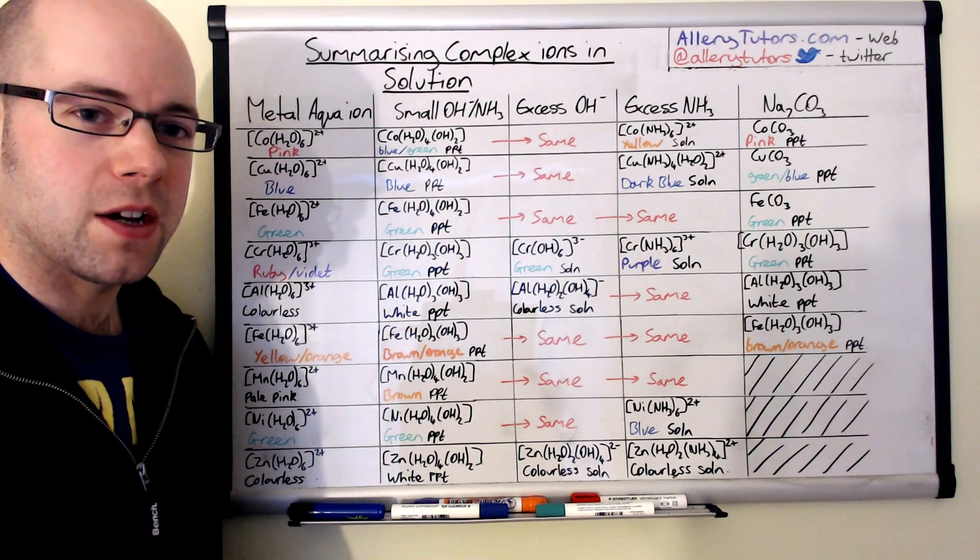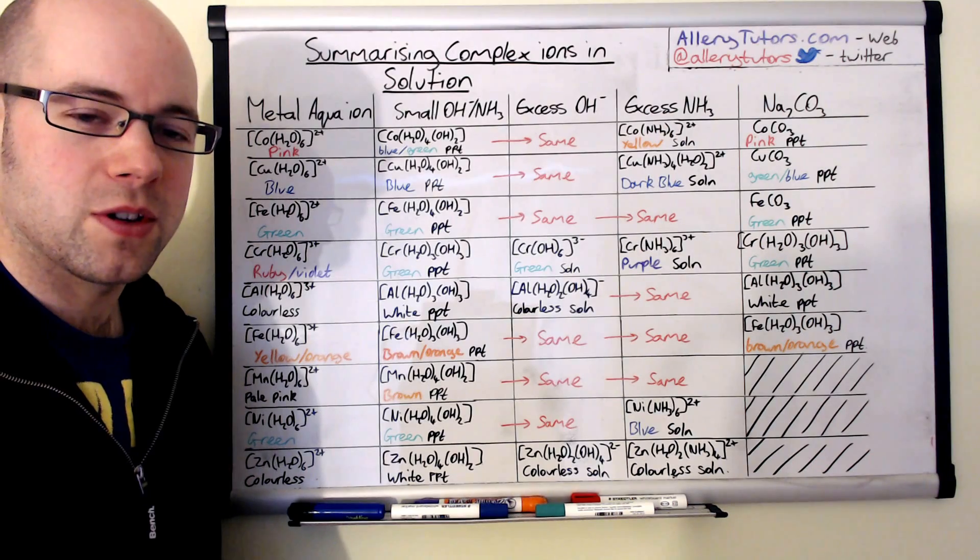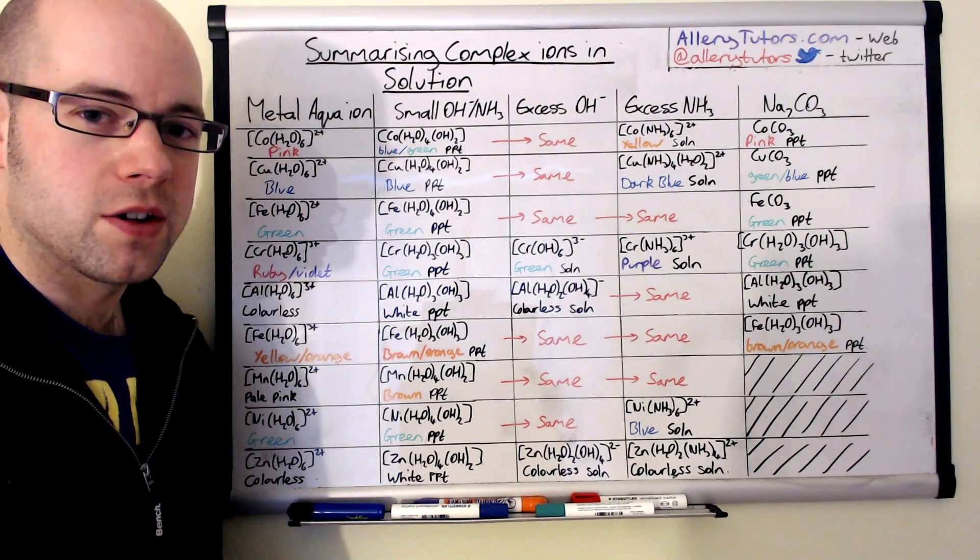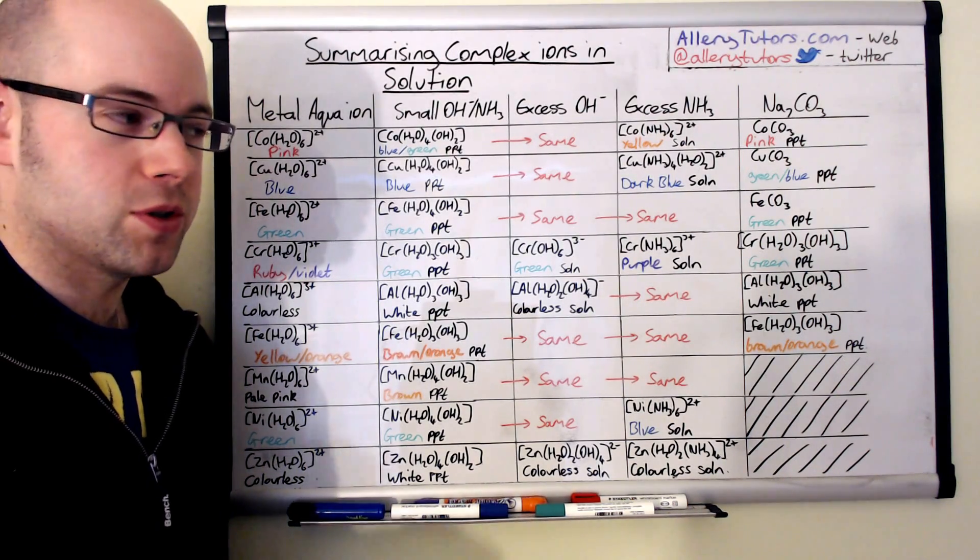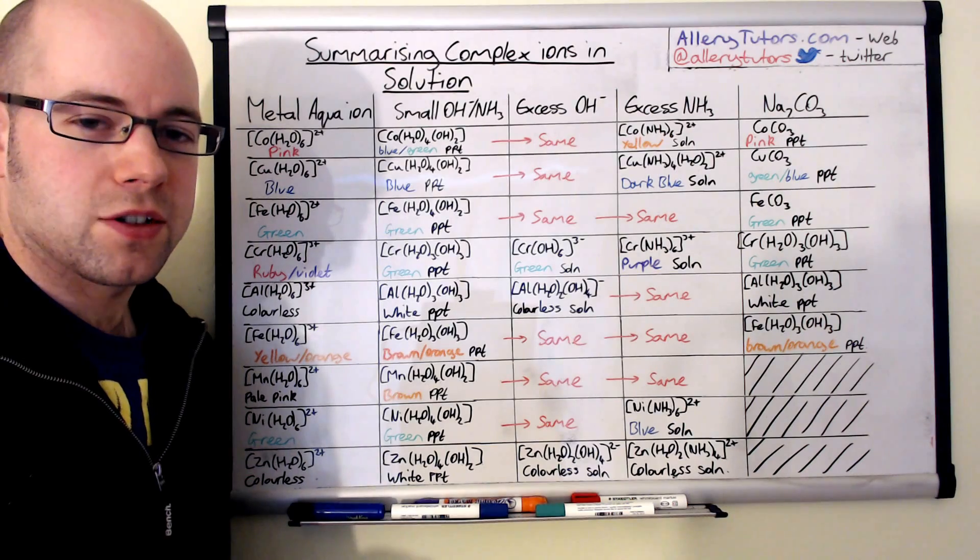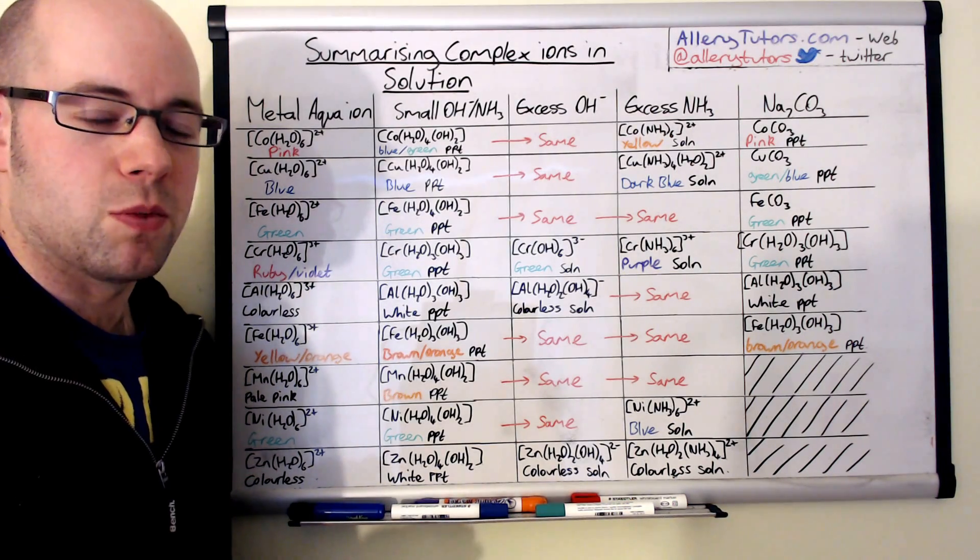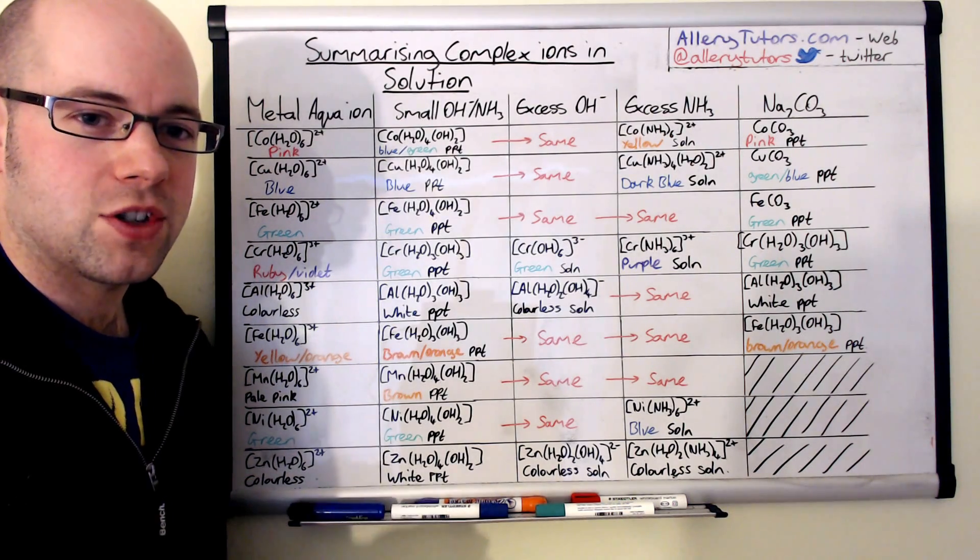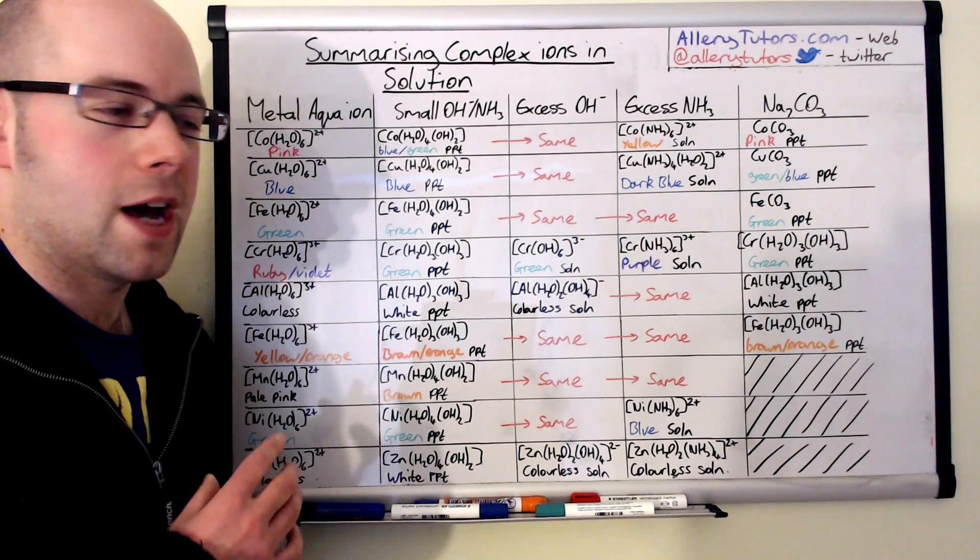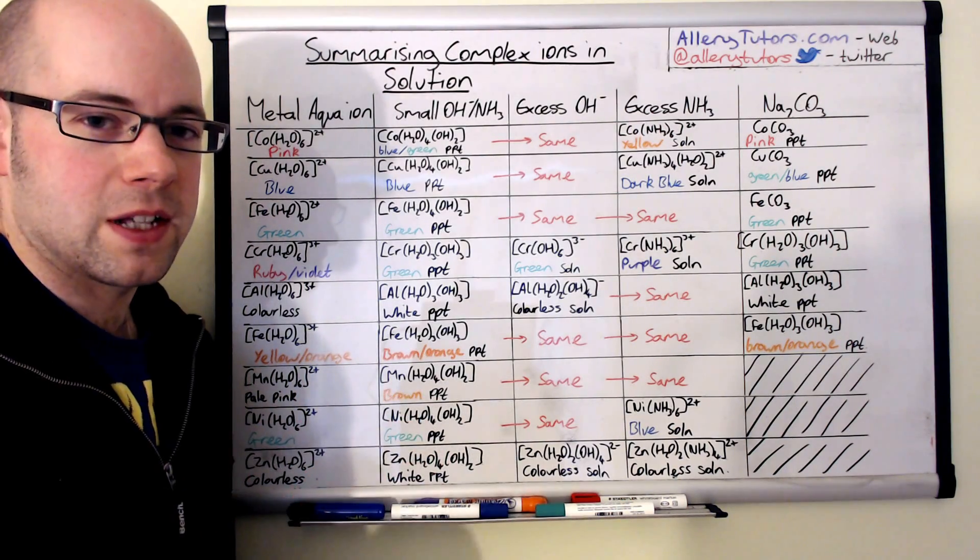Now you do need to check your exam board syllabus to make sure that you are learning the right colours. Not all exam boards need you to know all of these. Some want you to know bits of this table, some want you to know all of it, so you have to check with your syllabus first.